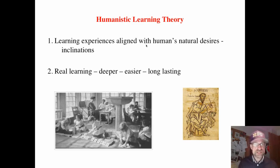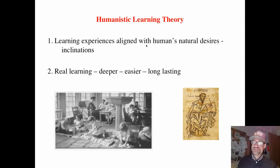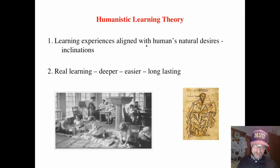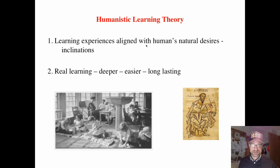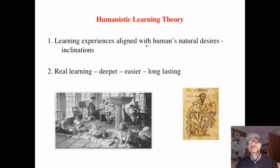Humans have these natural desires, these natural inclinations. Instead of subjugating them or trying to manipulate them, we say align with humans' natural desires and inclination. This results in real learning, deeper learning, more learning, and more long-lasting learning — when the learning situations are in alignment with humans' natural desires, tendencies, and developmental tasks.